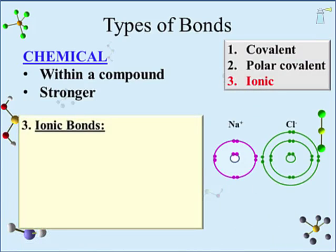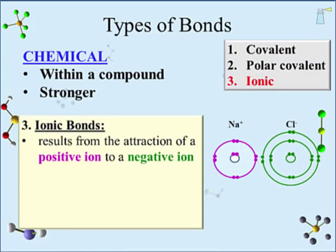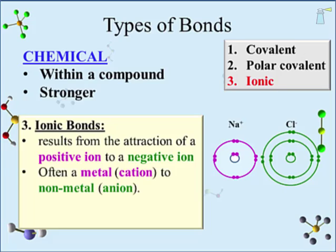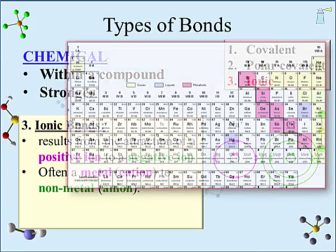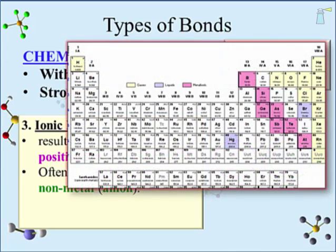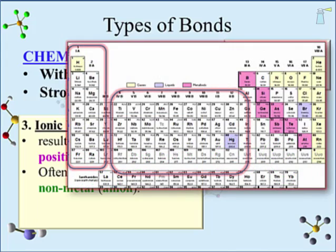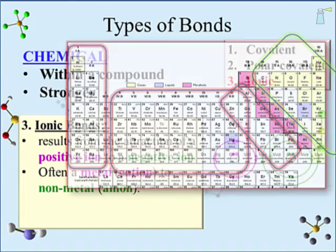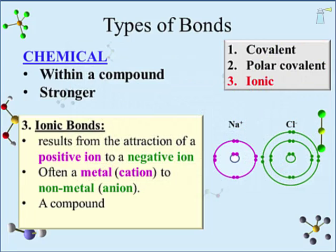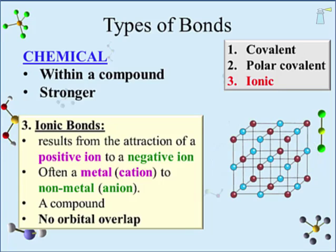The third type of bonding is ionic bonding. It results from the attraction of a positively charged ion to a negatively charged ion. Often the positive ion — a cation — is a metal, and the negative ion — the anion — is a non-metal. Metal cations can be found on the left of the periodic table, as well as the transition metals and some heavier main group elements. Unlike covalent bonds, ionic bonds are not considered molecules but are just called compounds, and they do not involve the overlap of orbitals. As a preview, ionic compounds form crystals — pictured here is a crystal lattice.